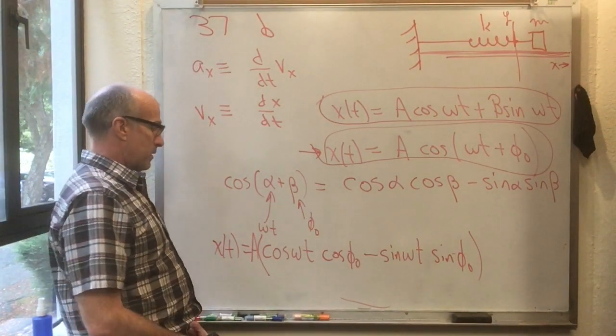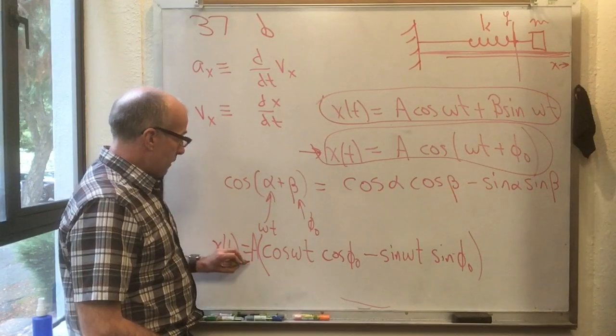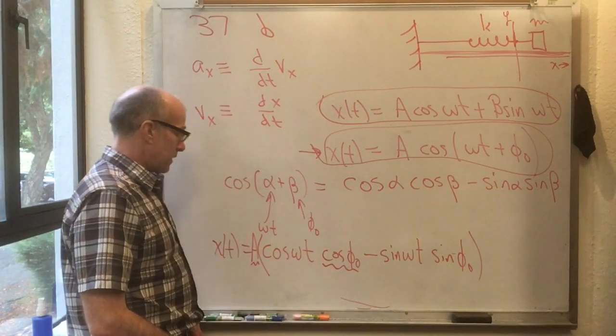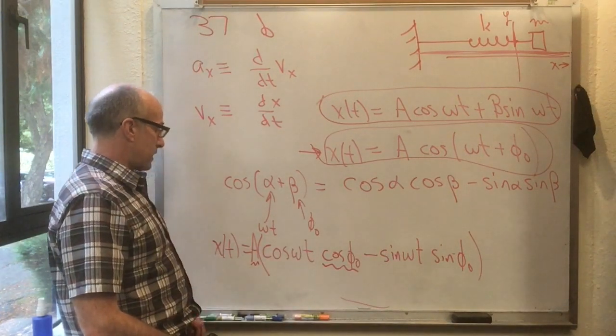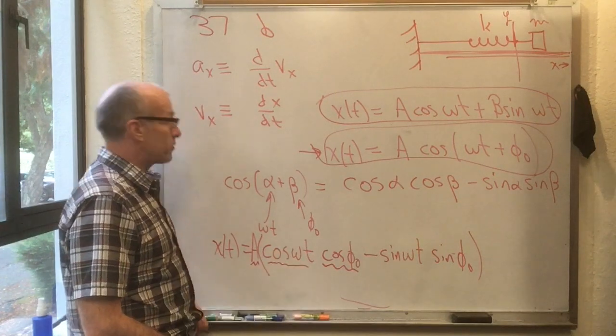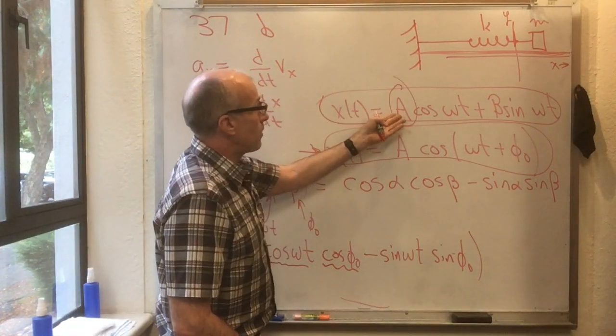And you realize that if I say a cos phi naught, that's just a constant. It doesn't depend on t. A cos phi naught is just some multiplier for cos omega t. Well, that could be a cos phi naught. Well, that could be this. Except instead of a up here, I have a cos phi naught.